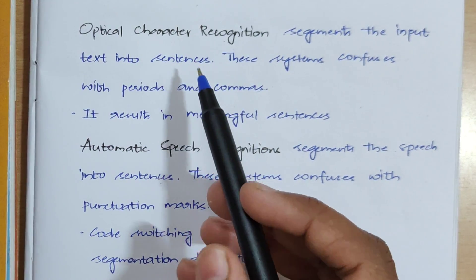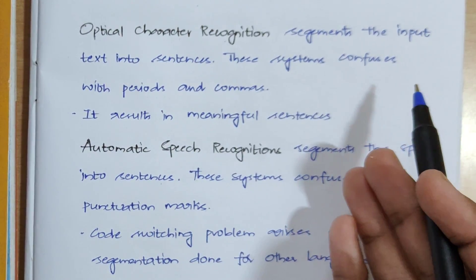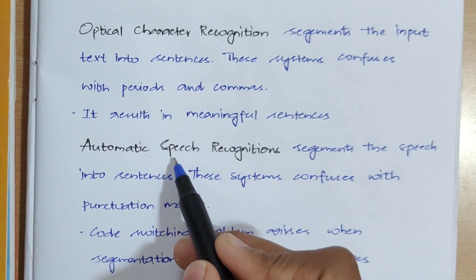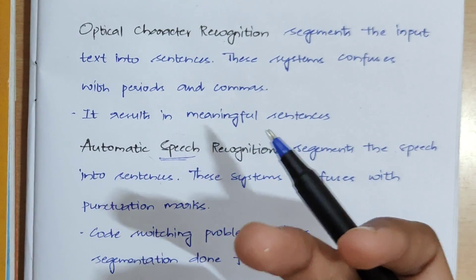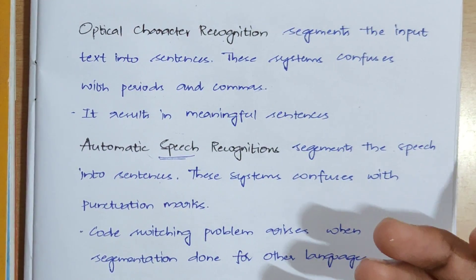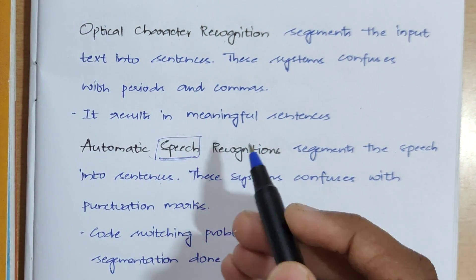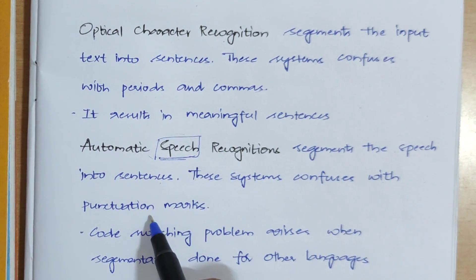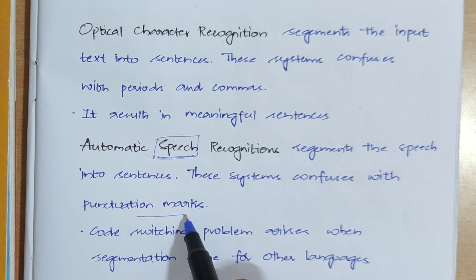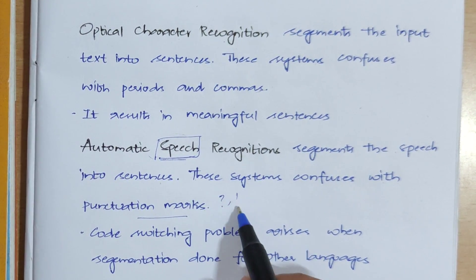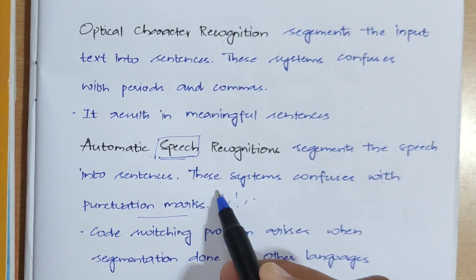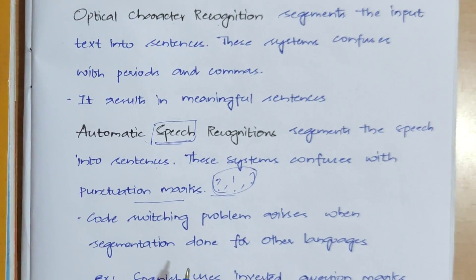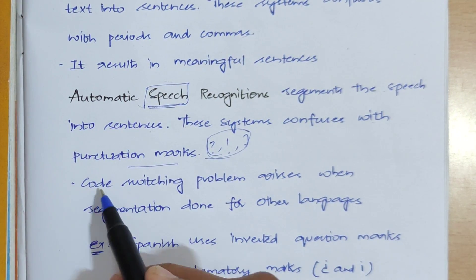The next system is Automatic Speech Recognition (ASR). While OCR changes input text, ASR converts the audio or speech given to the system. These kinds of systems may get confused with punctuation marks — exclamatory marks, question marks, full stops — and struggle to interpret those symbols correctly.